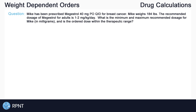Mike has been prescribed Magestral 40 mg PO QID for breast cancer. Mike weighs 184 pounds. The recommended dosage for Magestral for adults is 1 to 2 milligrams per kilogram per day.